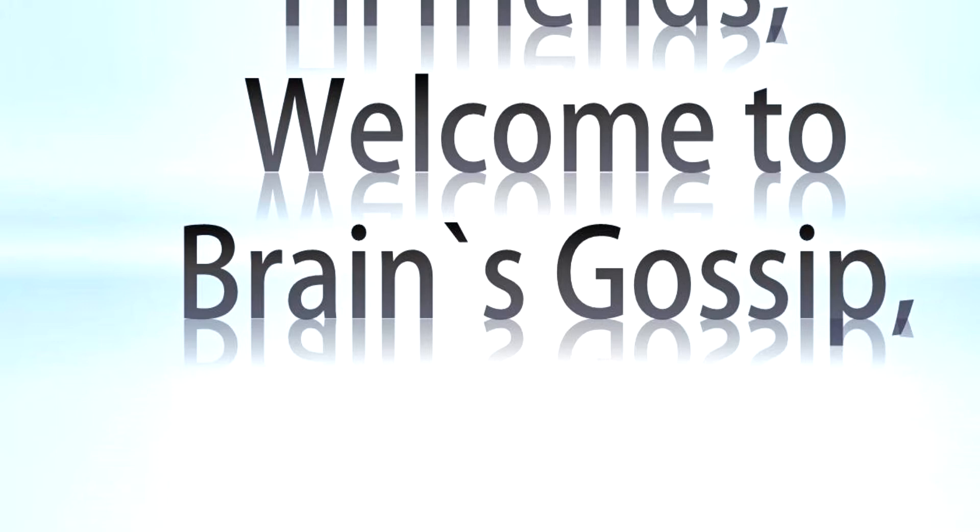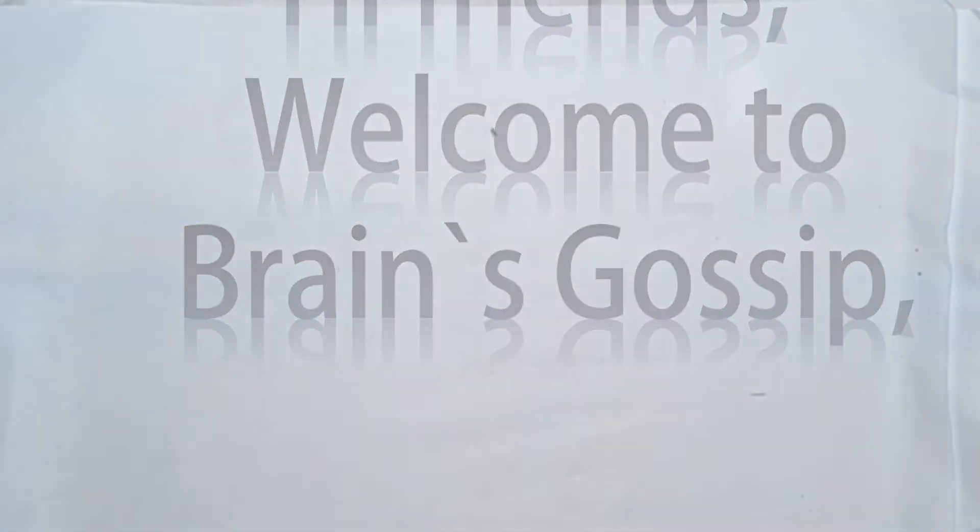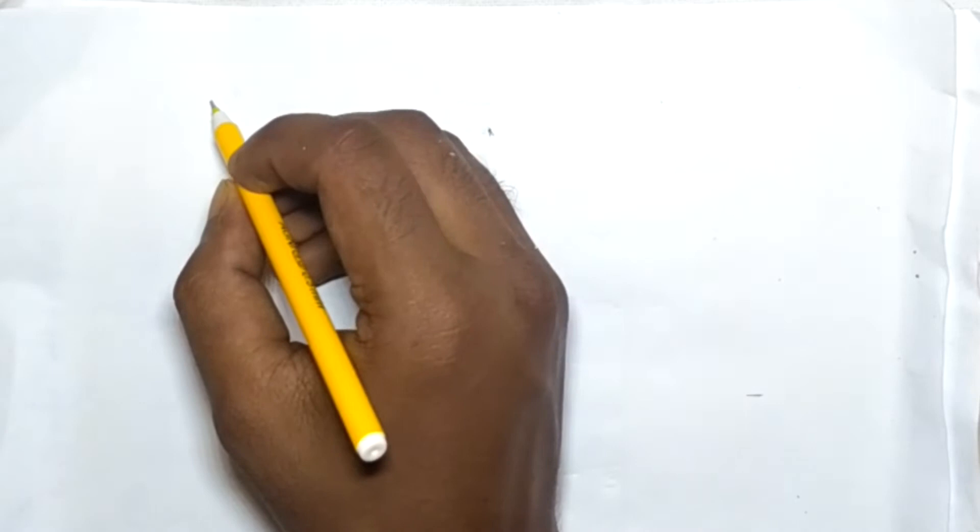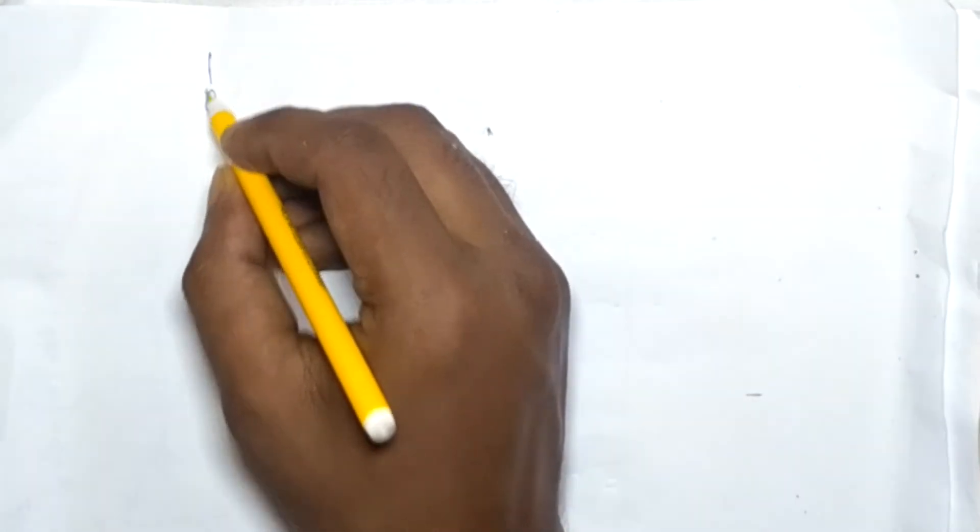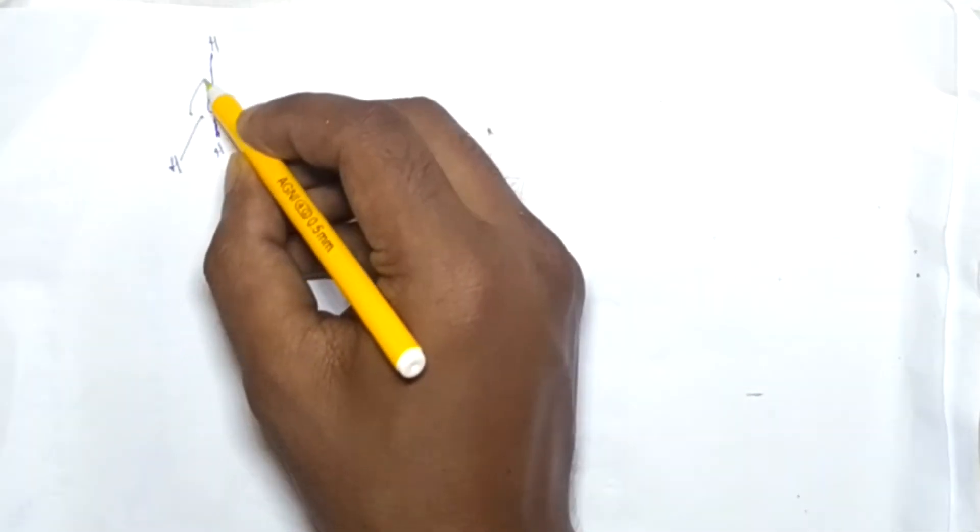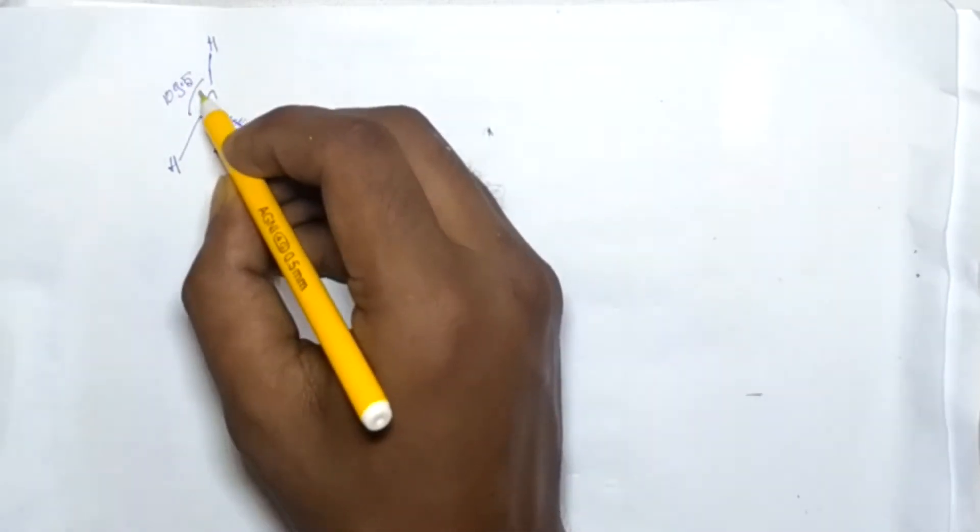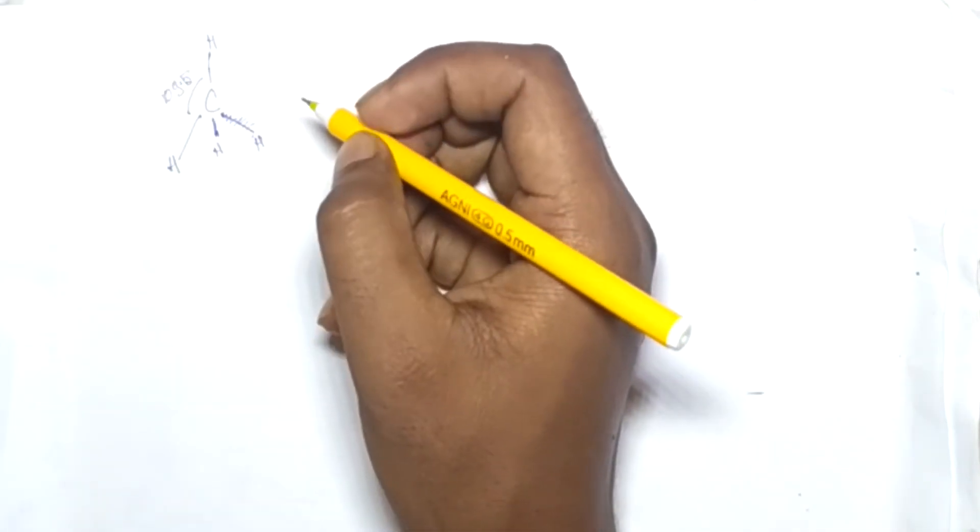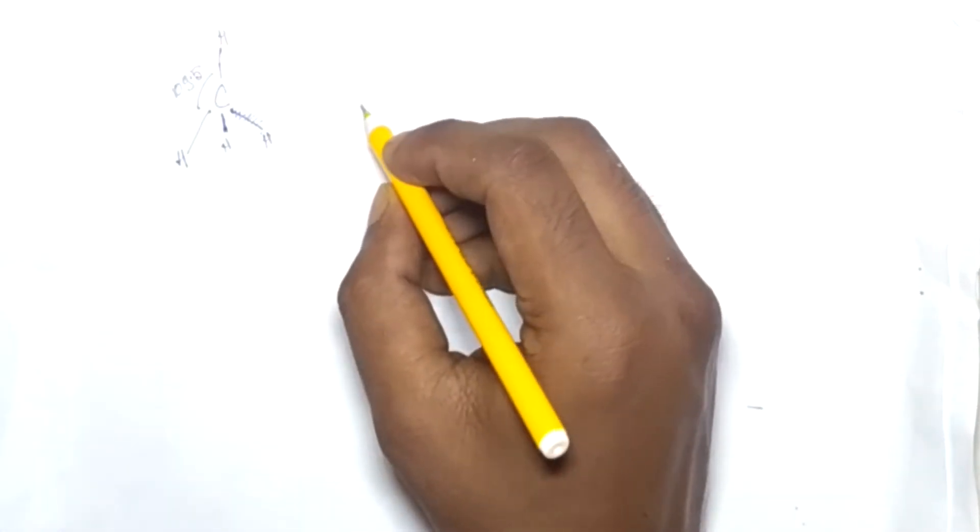Now CH4 is a tetrahedral molecule and the structure of CH4 molecule is like this. Now here the bond angle is 109.5. Now we can prove that the bond angle of CH4 is 109.5 by using standard geometrical method.